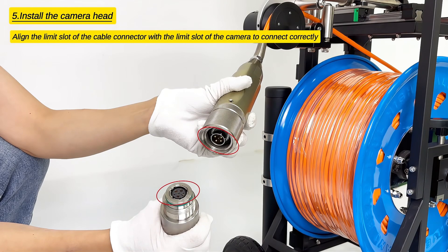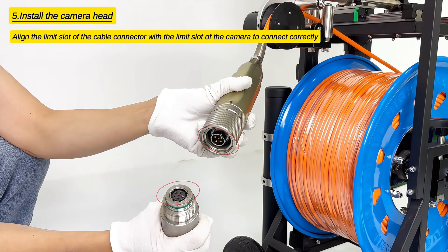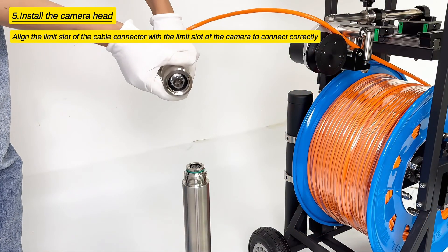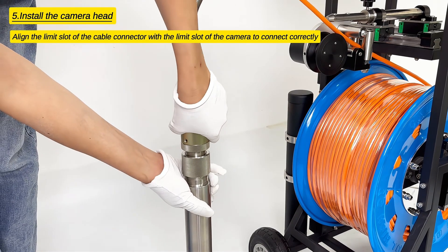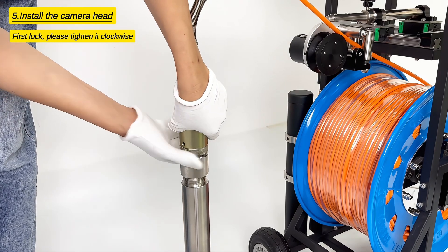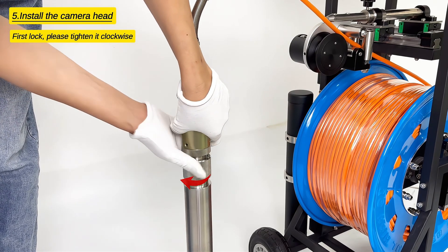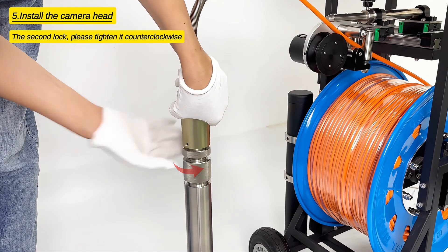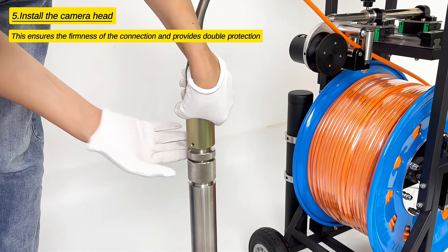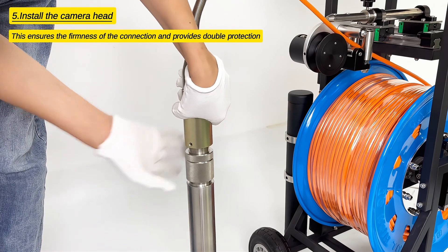Install the camera head. Align the limit slot of the cable connector with the limit slot of the camera to connect correctly. First lock, please tighten it clockwise. The second lock, please tighten it counterclockwise. This ensures the firmness of the connection and provides double protection.